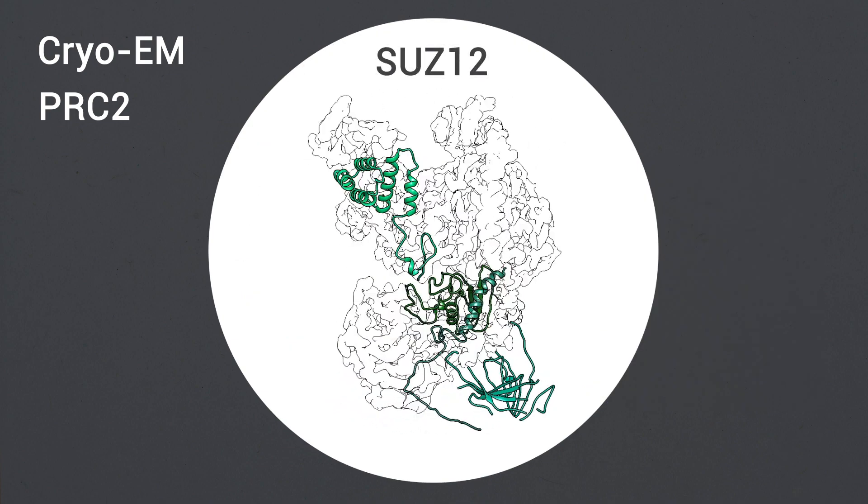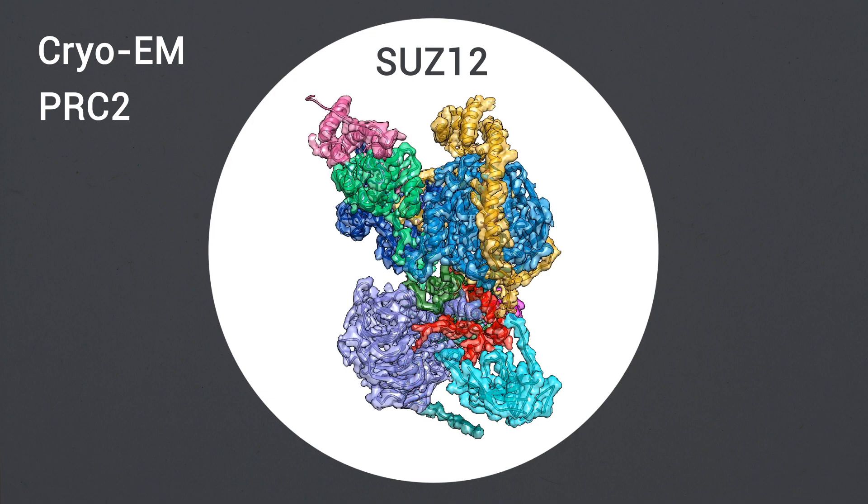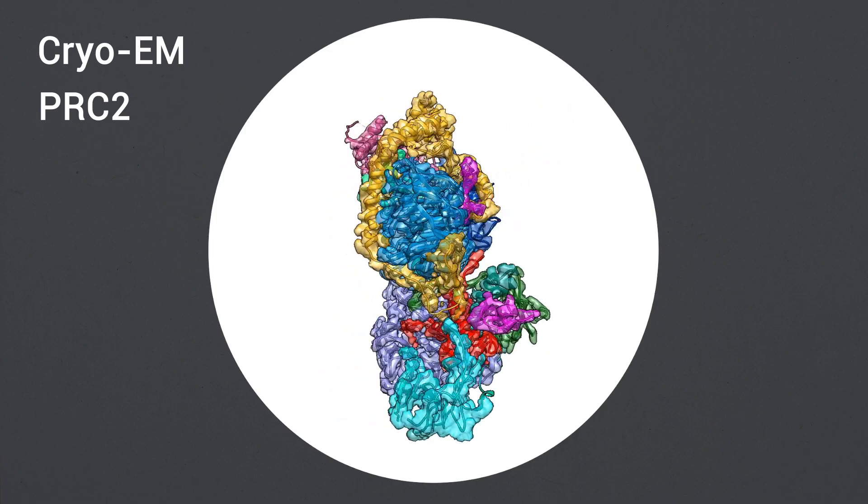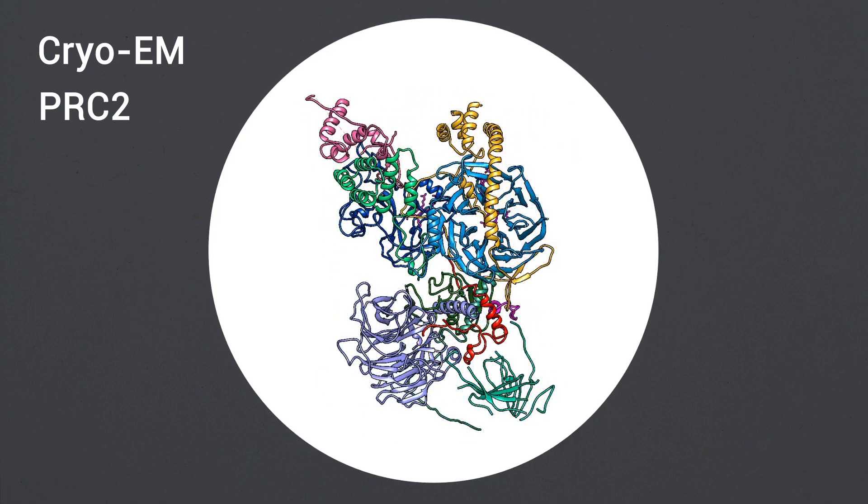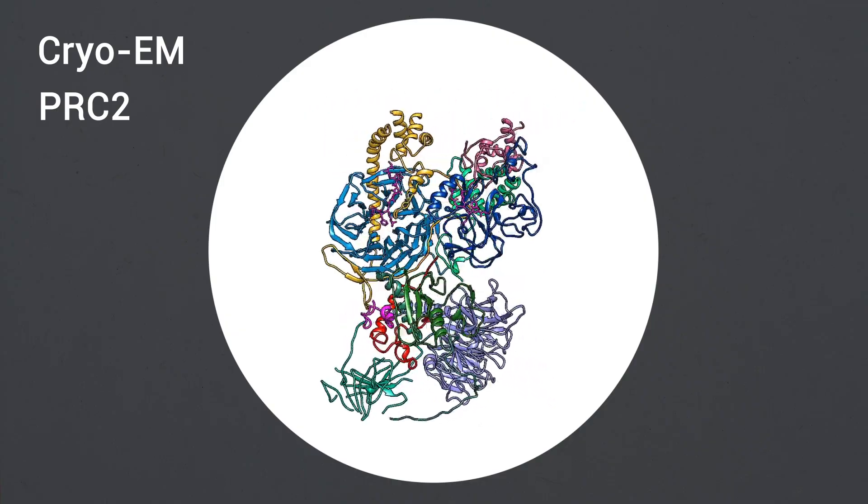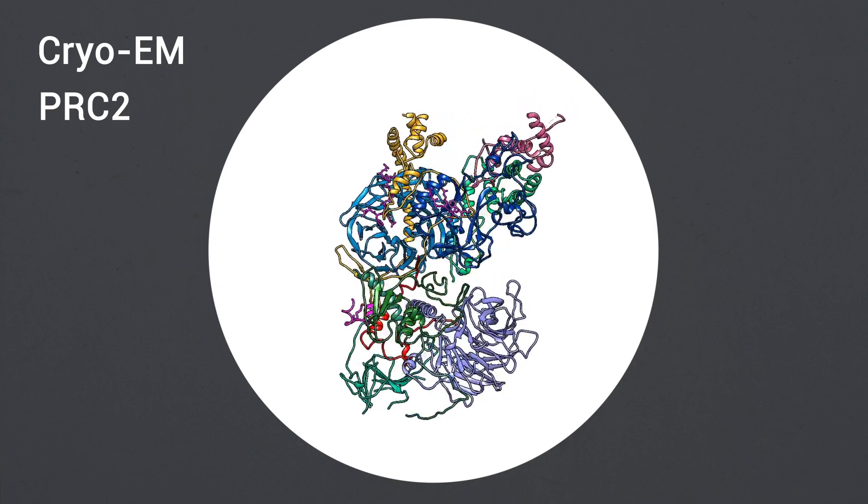SUZ12 interacts with all other subunits within the assembly and thus contributes to the stability of the complex. Our analysis defines the complete architecture of a functionally relevant PRC2 and provides a structural framework to understand its regulation by cofactors, histone tails, and RNA.